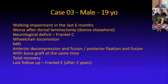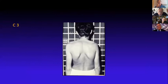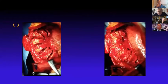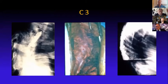The last case is a male, 19 years old, also with walking impairment in the last six months. He had been submitted to a laminectomy elsewhere and became Frankel C — wheelchair locomotion. We decided to do anterior discectomy, lateral transthoracic approach, and use bone graft to fuse the spine. Then we went posteriorly to correct, and it was not easy — the patient had been operated before, so there was scar tissue.